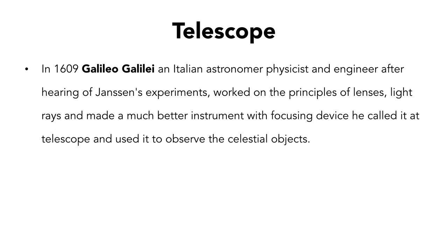Later, Galileo Galilei, an Italian astronomer, physicist, and engineer, after hearing about Janssen's experiments, worked on the principle of lenses and light and made a much better instrument with a focusing device. He called it a telescope and used it to observe heavenly or celestial objects such as stars and planets.